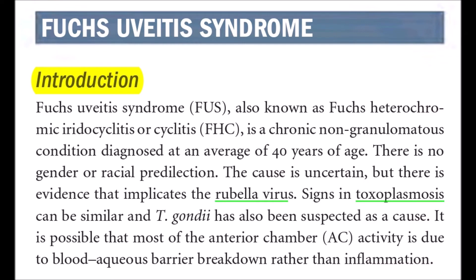Fuchs uveitis syndrome, also known as Fuchs heterochromic iridocyclitis or cyclitis, is a chronic non-granulomatous condition diagnosed at an average of 40 years of age. There is no gender or racial predilection. The cause is uncertain but evidence implicates the rubella virus. Signs in toxoplasmosis can be similar and Toxoplasma gondii has been suspected as a cause. It is possible that most of the anterior chamber activity is due to blood-aqueous barrier breakdown rather than inflammation.